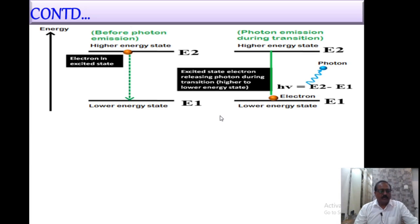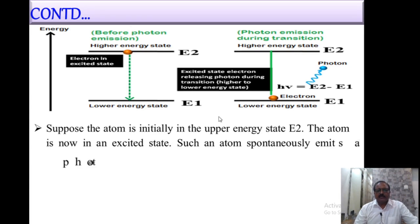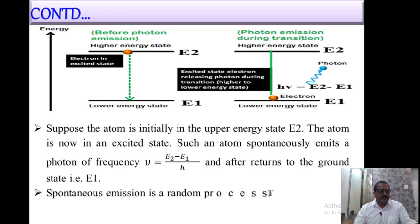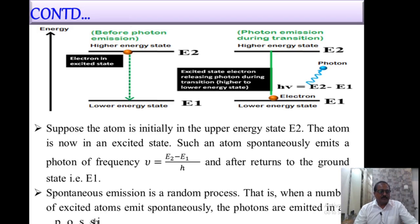Suppose the atom is initially in the upper energy state E2 — the excited state. Such an atom spontaneously emits a photon of frequency ν = (E2 − E1) / h, where hν = E2 − E1, and then returns to the ground state E1. Spontaneous emission is a random process: when a number of excited atoms emit spontaneously, the photons are emitted in all possible directions and with random phases.